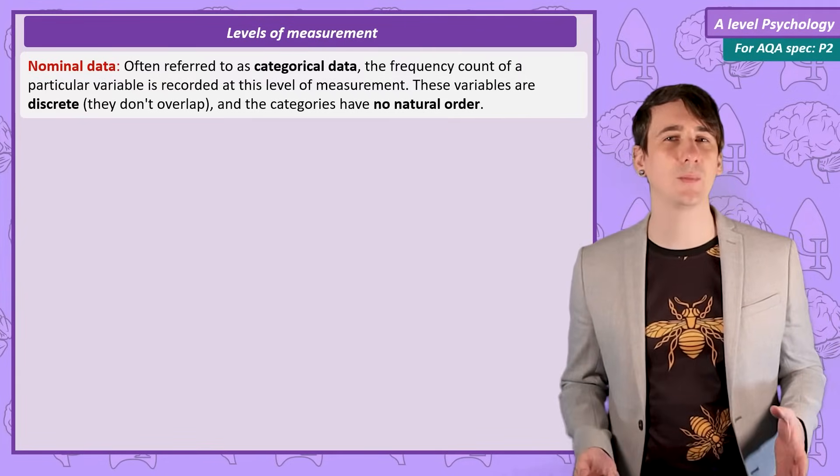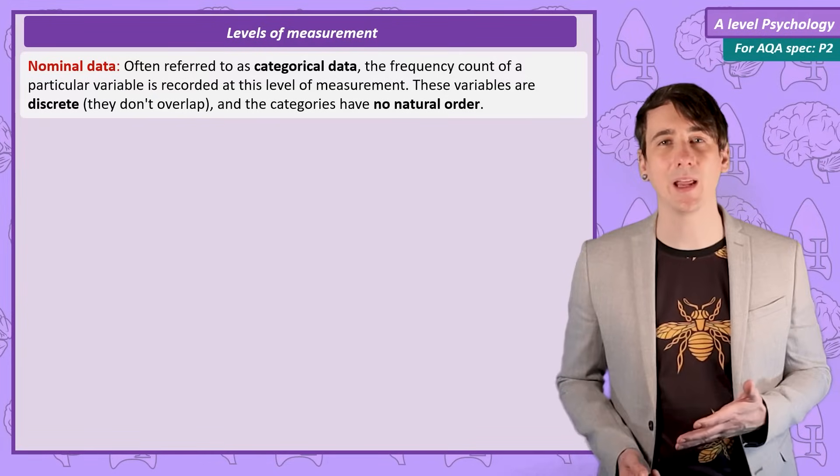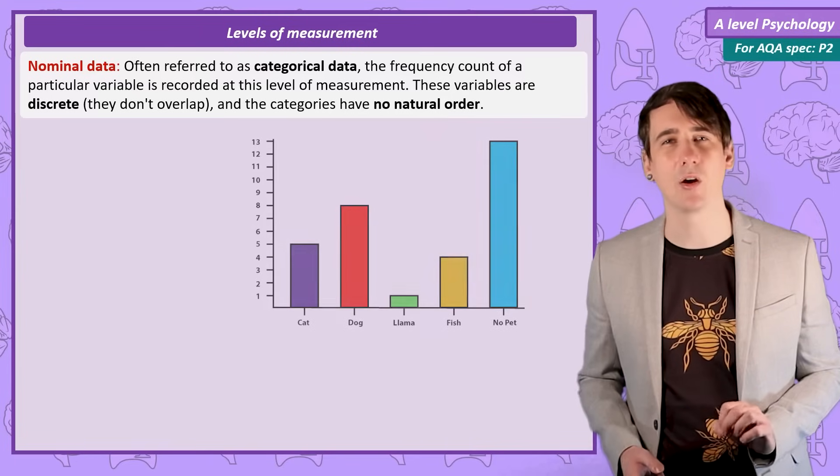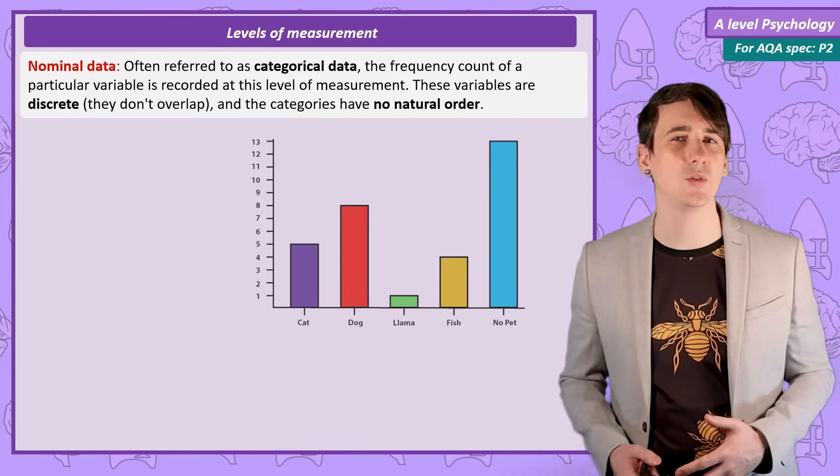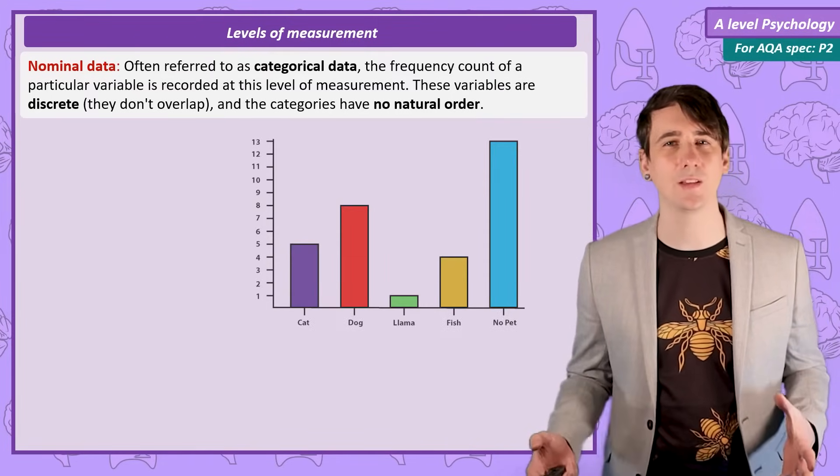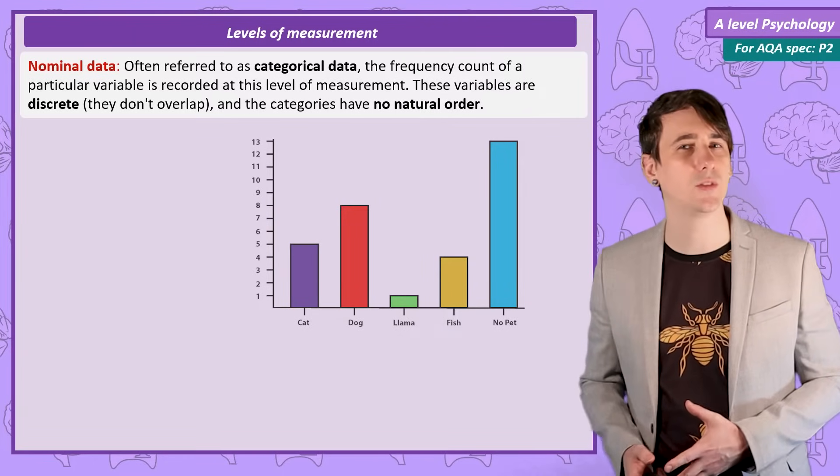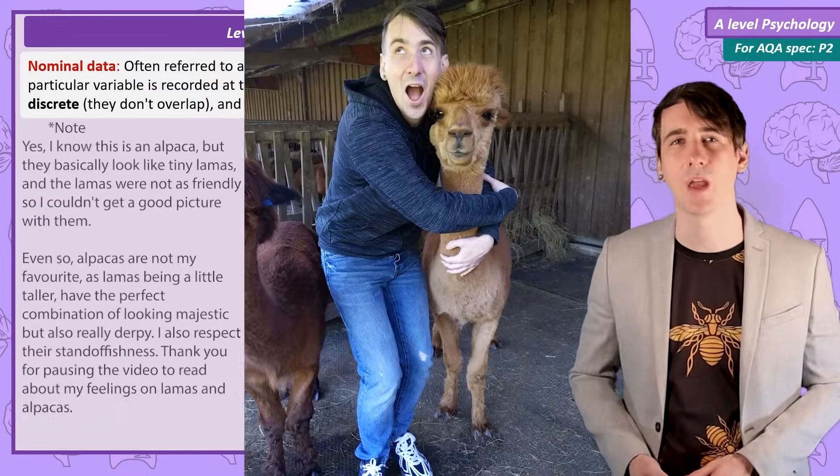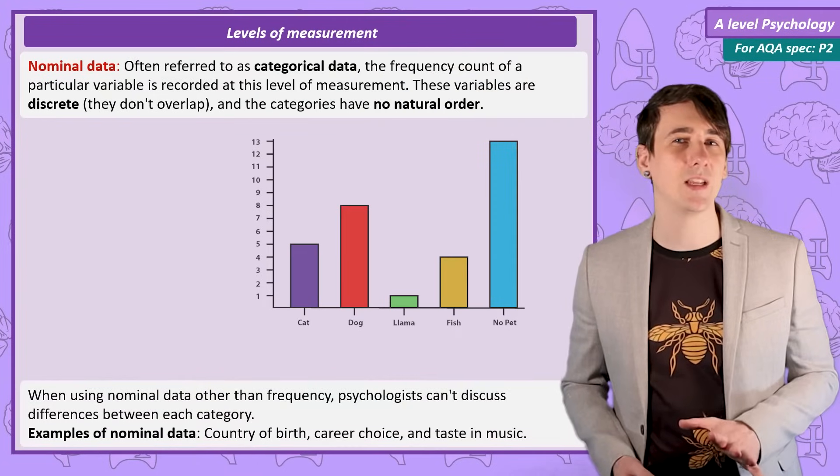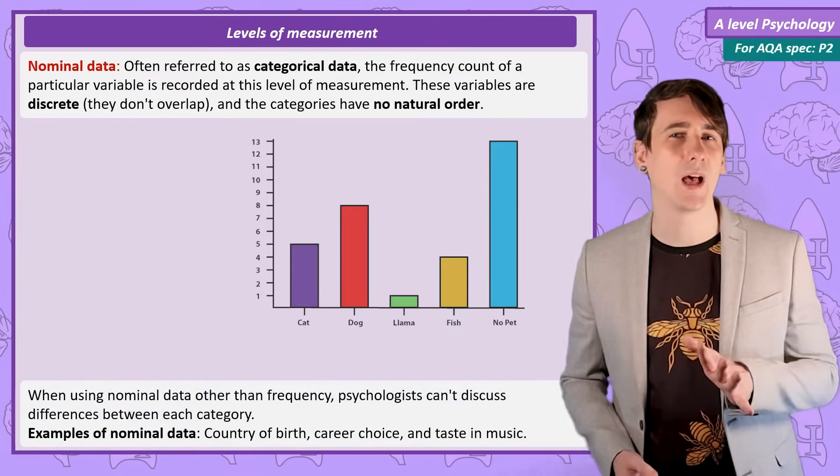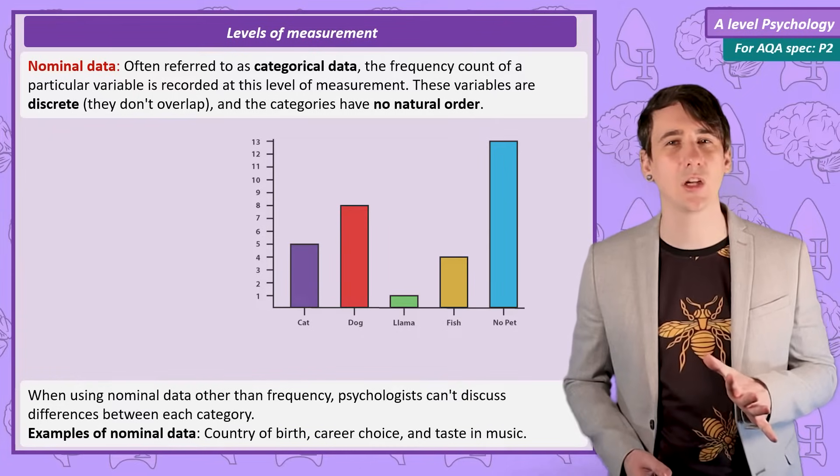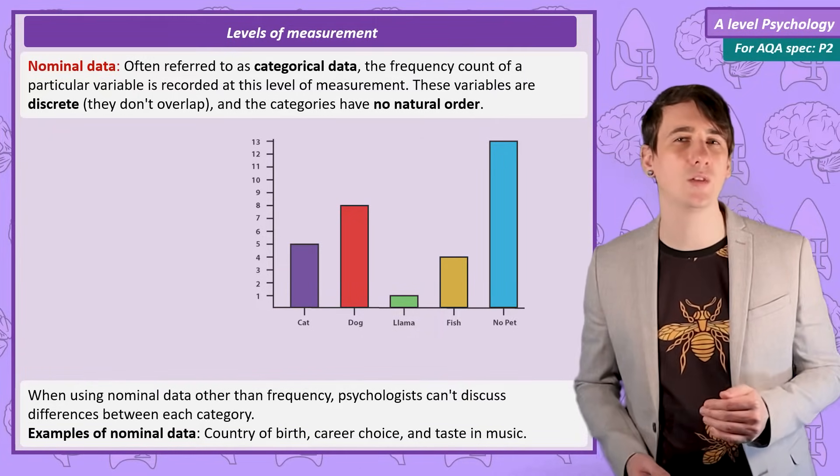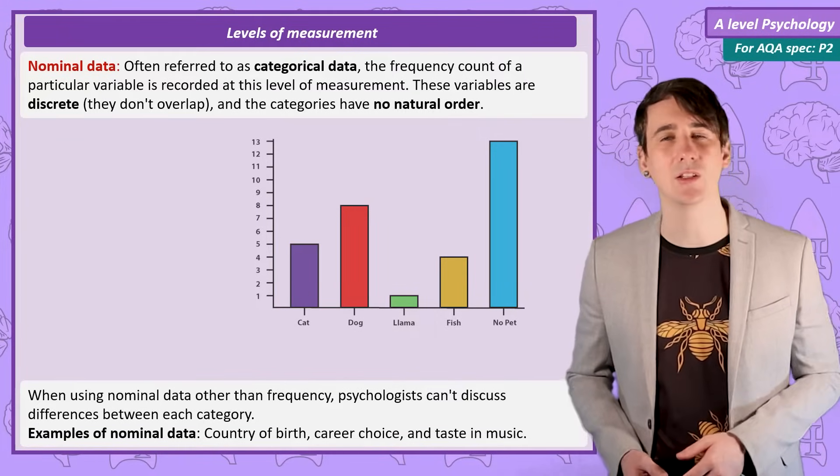A good example to explain this is pet choice. I might collect the pet choice data from my class of 30 students. I find in my data collection there are 5 students with cats, 8 students with dogs, 13 students with no pets, 4 students with a fish and 1 student who has a llama, objectively the best animal in the world. So now we have collected this data we can certainly record and compare the frequency of pet ownership between the separate categories, but beyond this we can't really talk about the differences between each category.